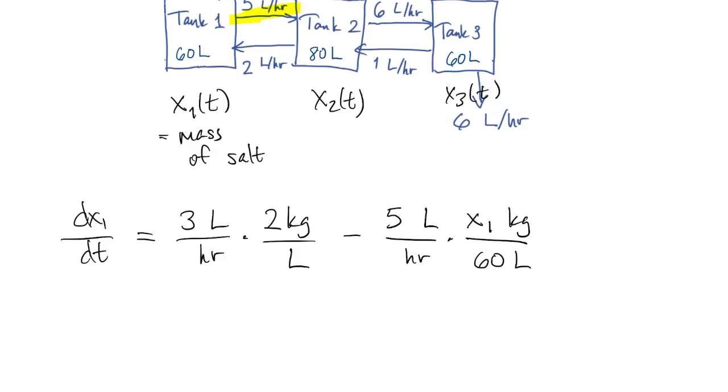And then we have to consider the connection from tank two into tank one. So we have an increase of two liters per hour times the concentration in tank two. And that's everything that's happening to the salt in tank one.